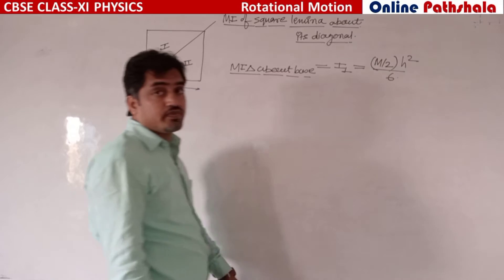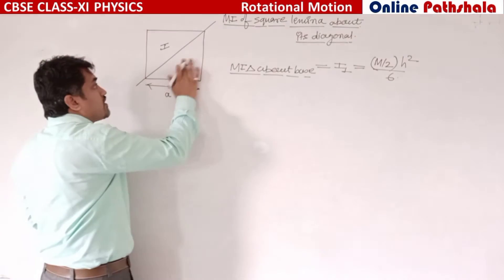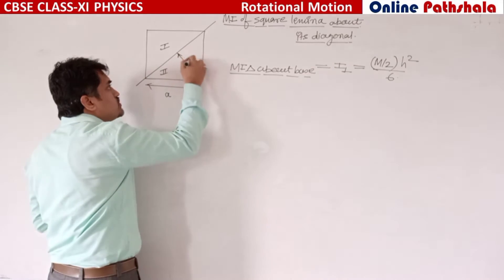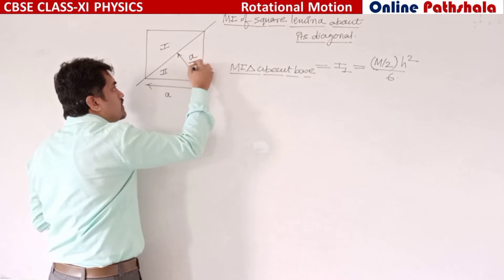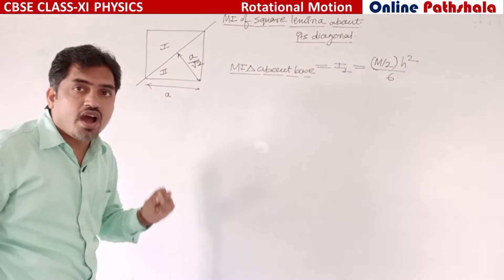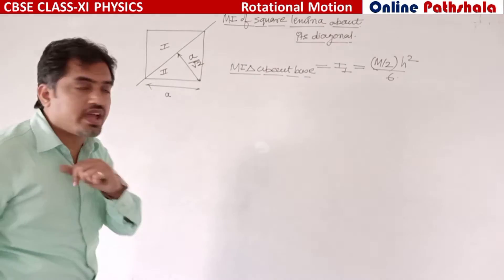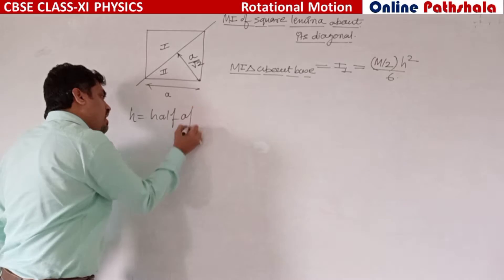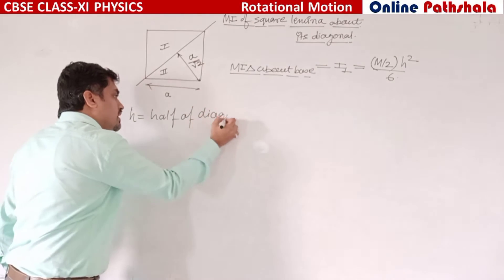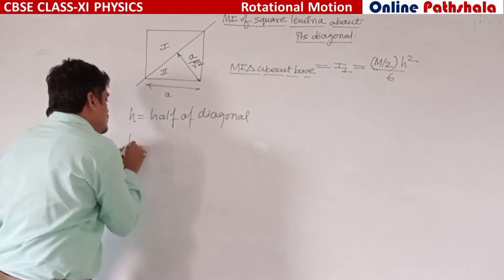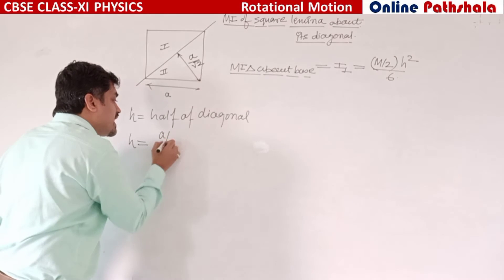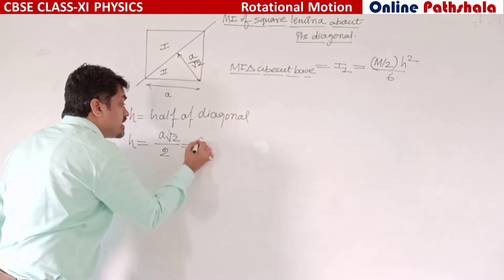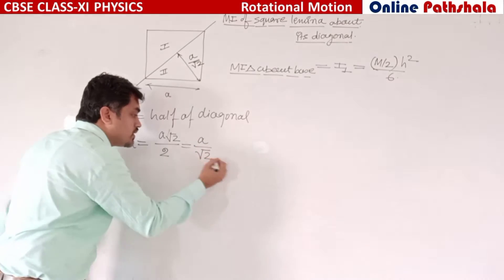What is h? What is the height from this base? It should be a/√2. The height h is half of the diagonal. The diagonal of a square with side 'a' is a√2, so half of the diagonal is a√2/2, which equals a/√2.